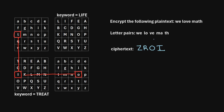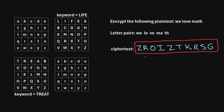We'll continue this process for the remaining letter pairs. Here is what we end up getting for our ciphertext. That's how we can encrypt the plaintext "WeLoveMath" using this four-square cipher.